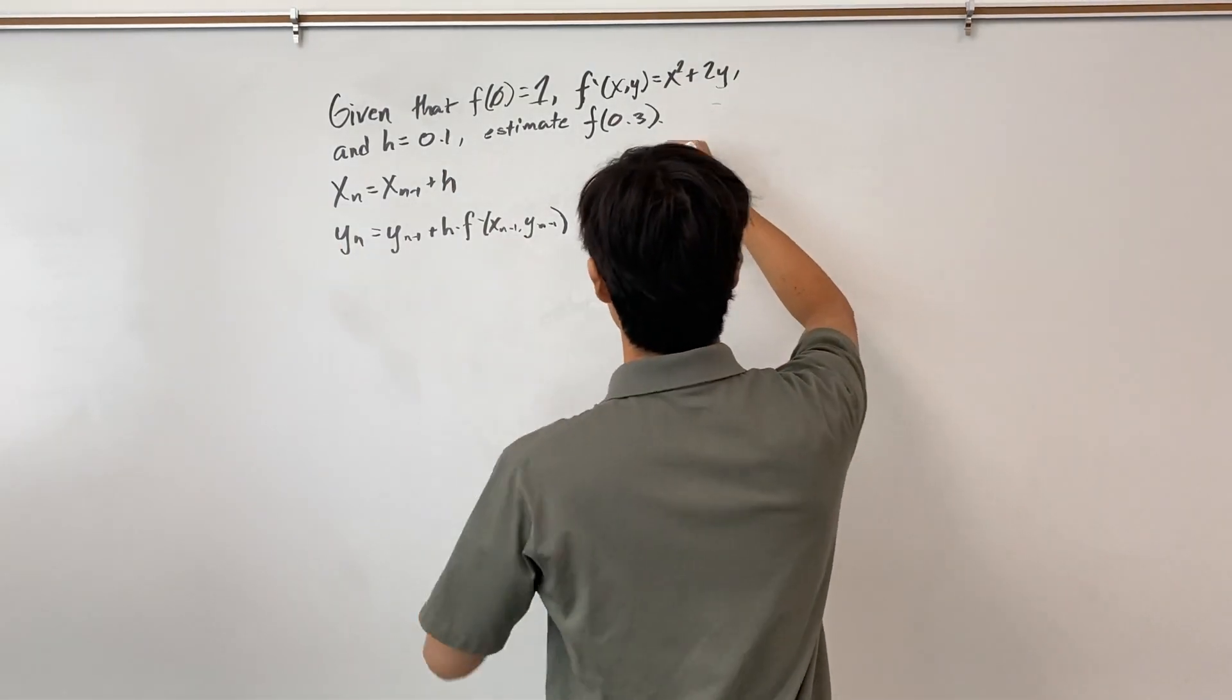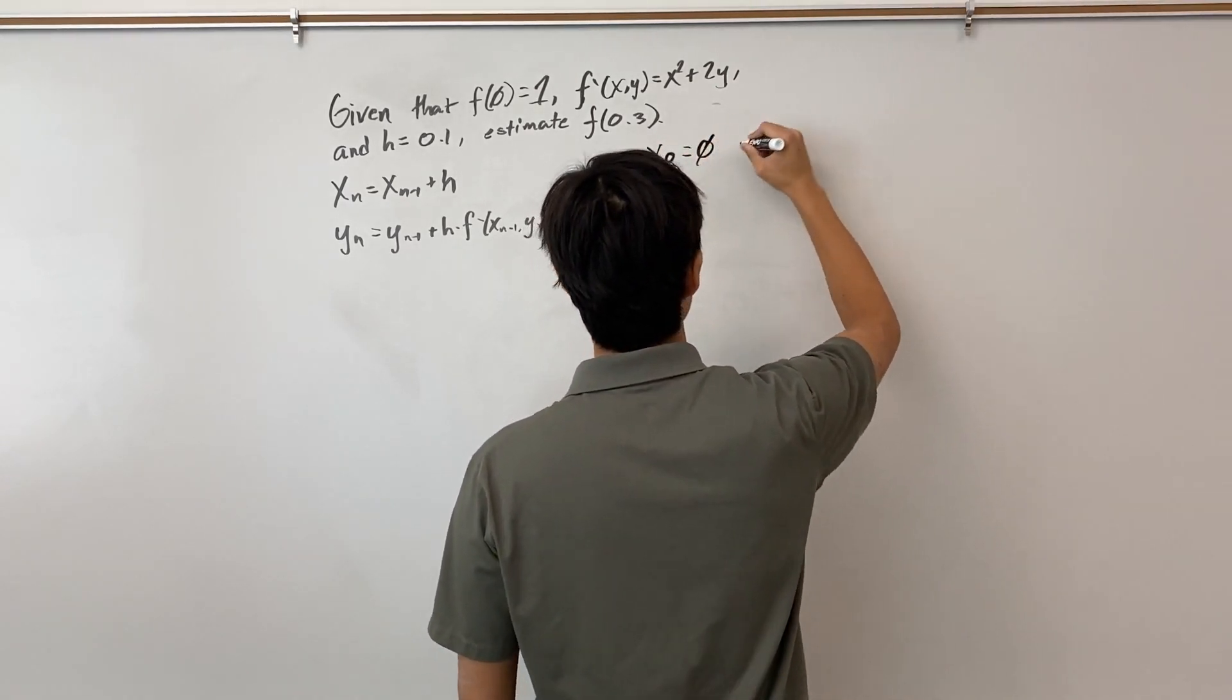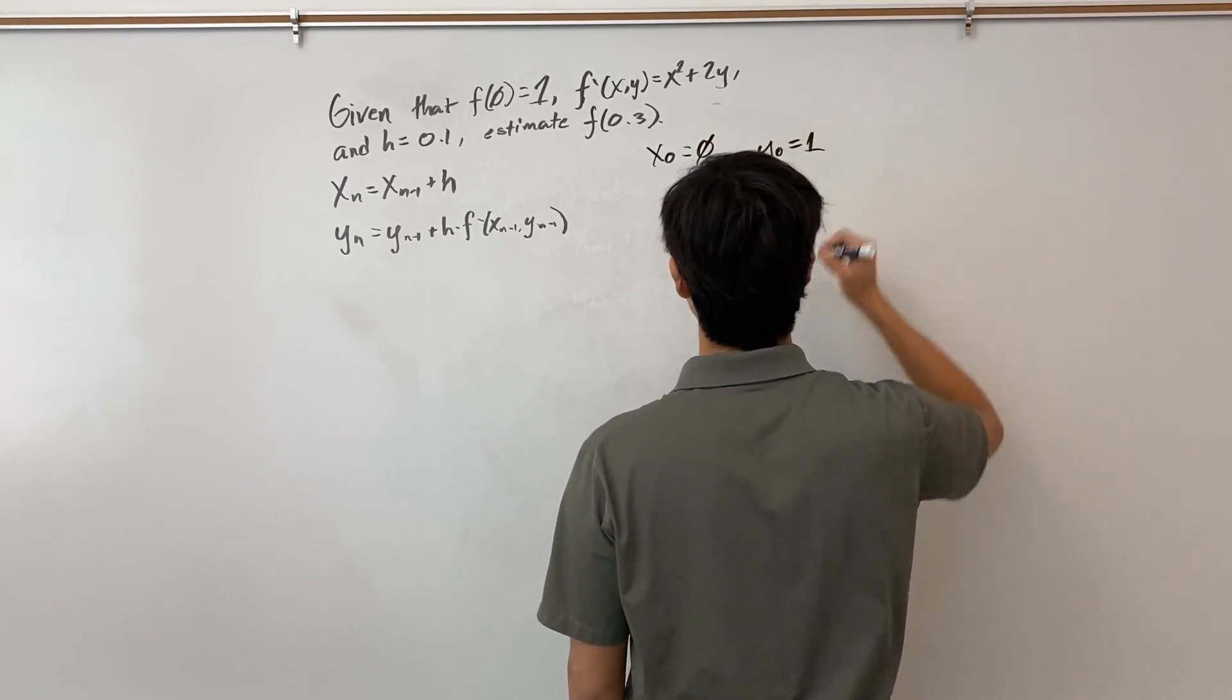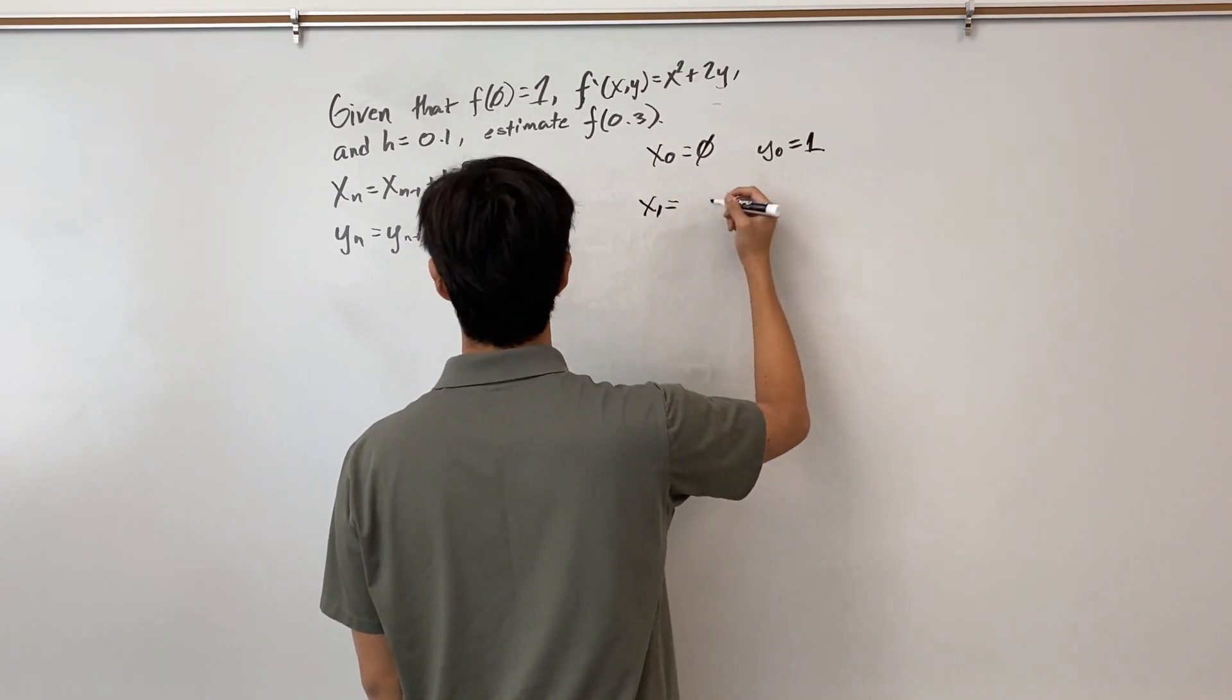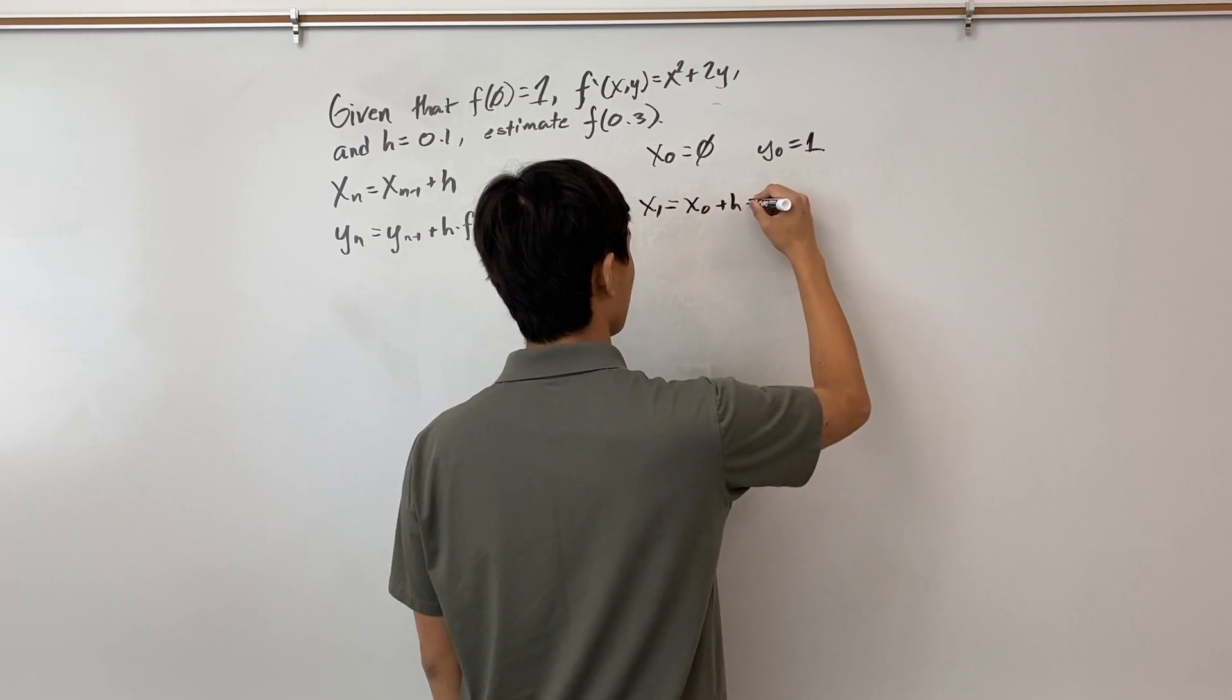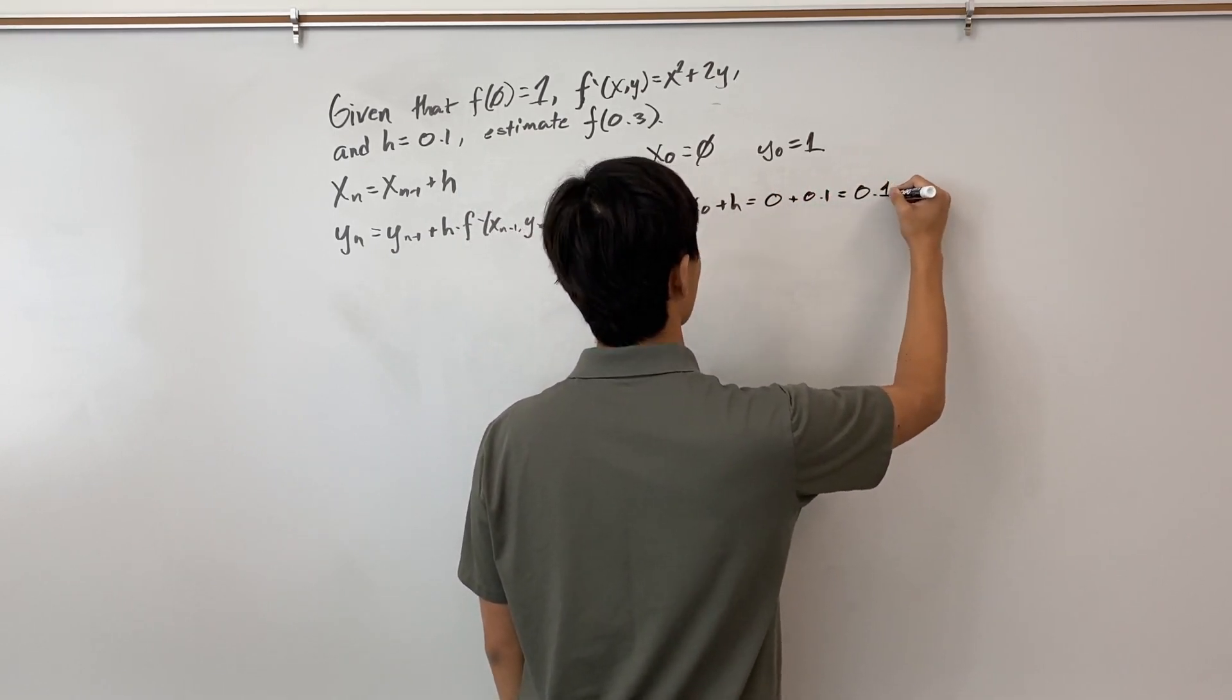We're given x₀ = 0, y₀ = 1. To find x₁, this is x₀ + h, which is 0 + 0.1, which is 0.1.